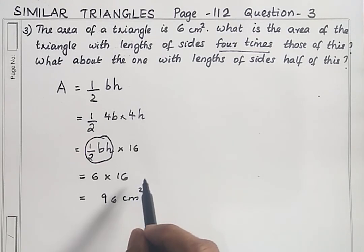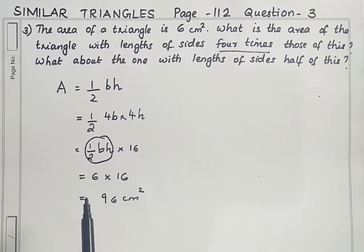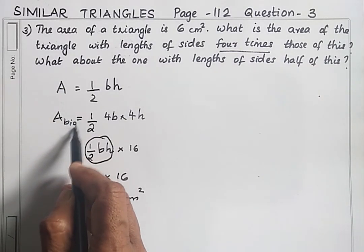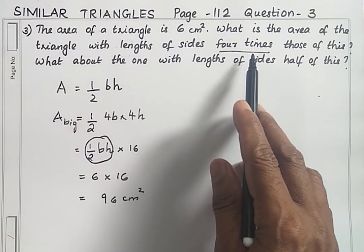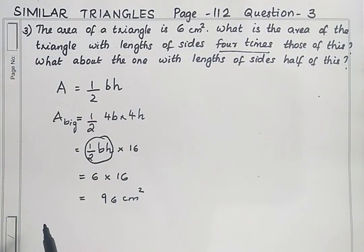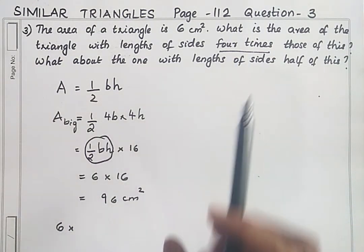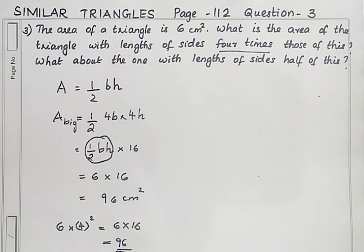The base and height sides are 4 times, so the new area is 96 cm². Using the scale factor method: scale factor is 4, so area = 6 × 4² = 6 × 16 = 96 cm². This is the area of the bigger triangle.